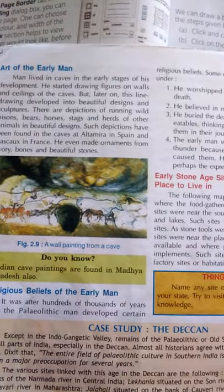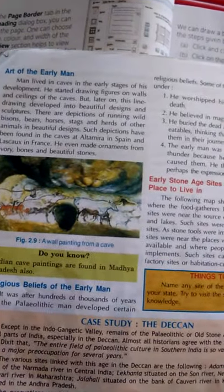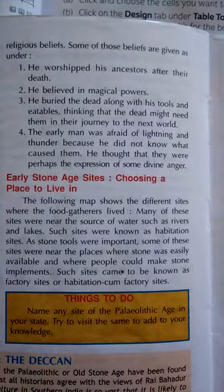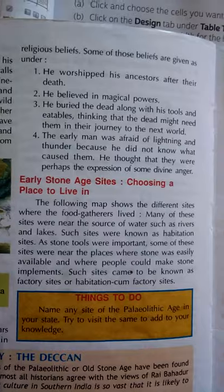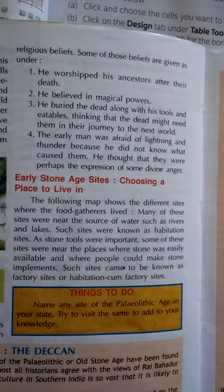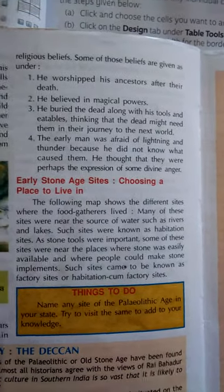The next heading is Religious Beliefs of Early Man. It was after hundreds of thousands of years that the Paleolithic man developed certain religious beliefs. The people of the Old Stone Age believed in divine powers. They worshipped ancestors after their death, believed in magic, buried dead bodies, and feared lightning — thinking that a god was angry with them.